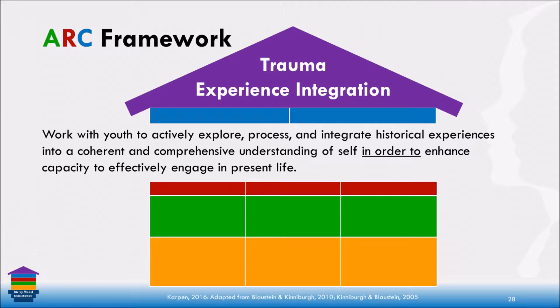All of this builds toward trauma experience integration — a summative block in the framework — the idea that everything we're doing is ultimately in pursuit of helping youth feel like they can make sense of their lives, that they have agency, that they can move forward, and that they have value. Do I have someone who has an irrational love of me? Do I have someone who believes in me? If we do nothing else in our work, it's helping our youth feel like they want to be with people. A huge piece of this is: do I feel not so much like a victim of things that have happened to me, but do I feel mastery over these things — that they make me who I am and I can move forward in life?